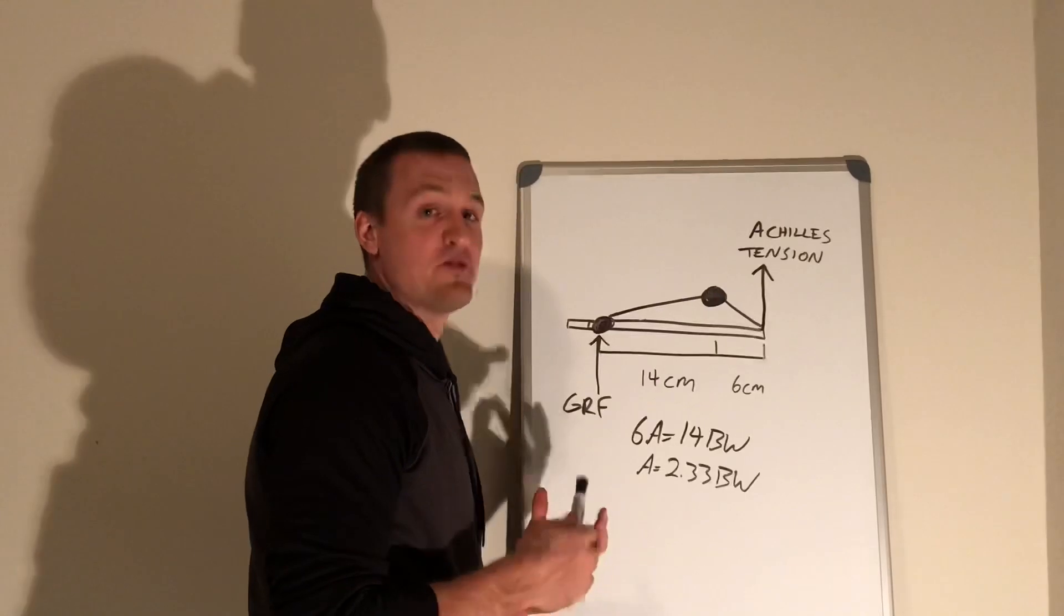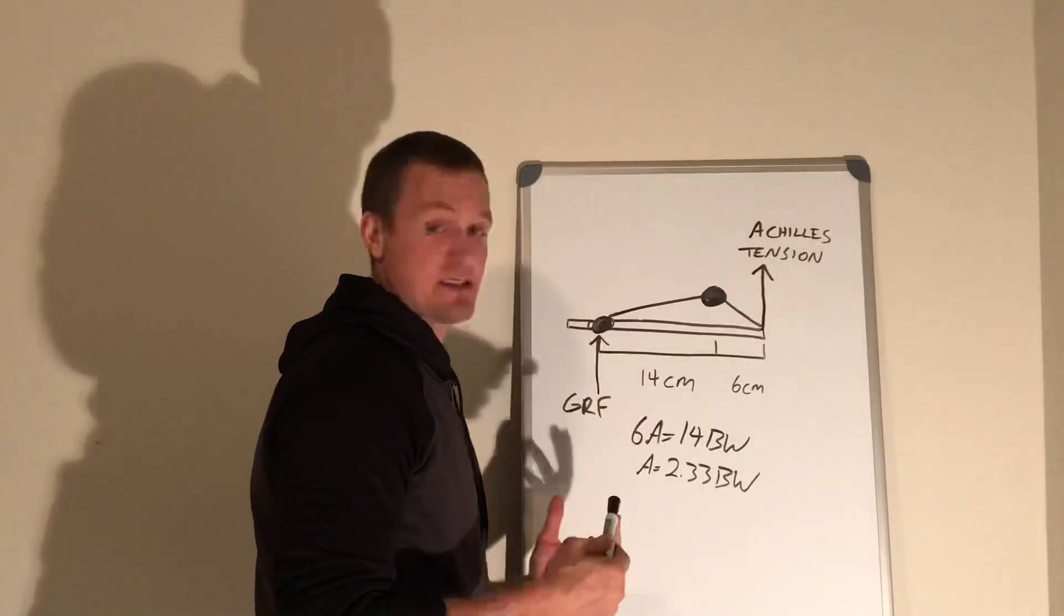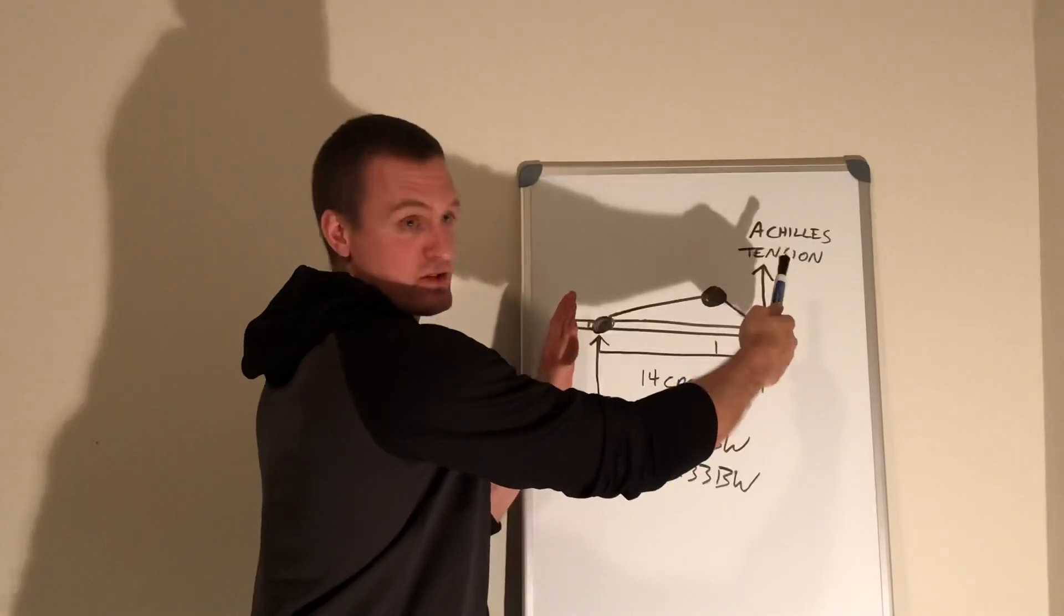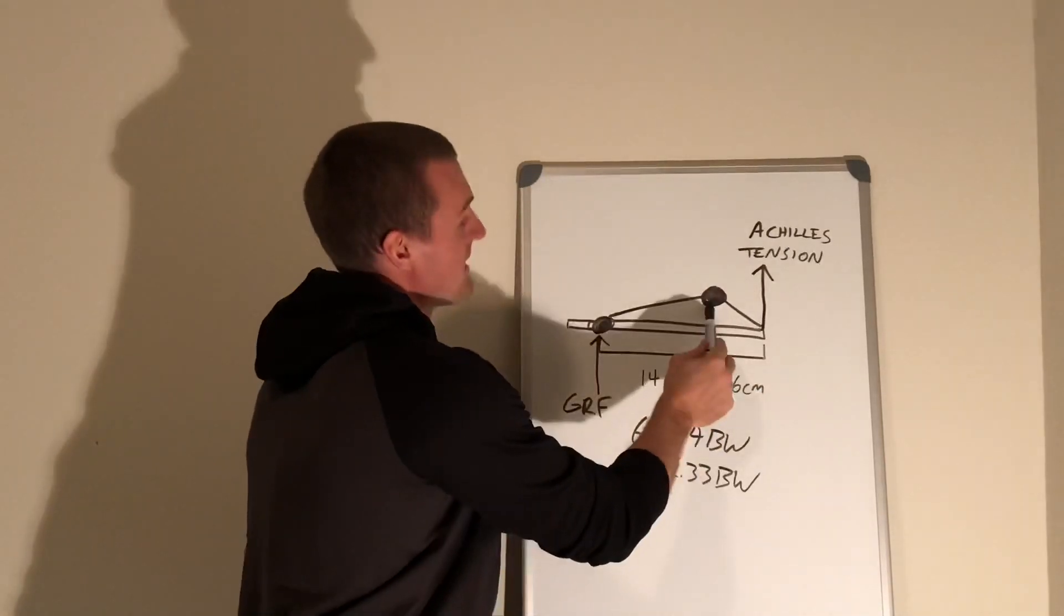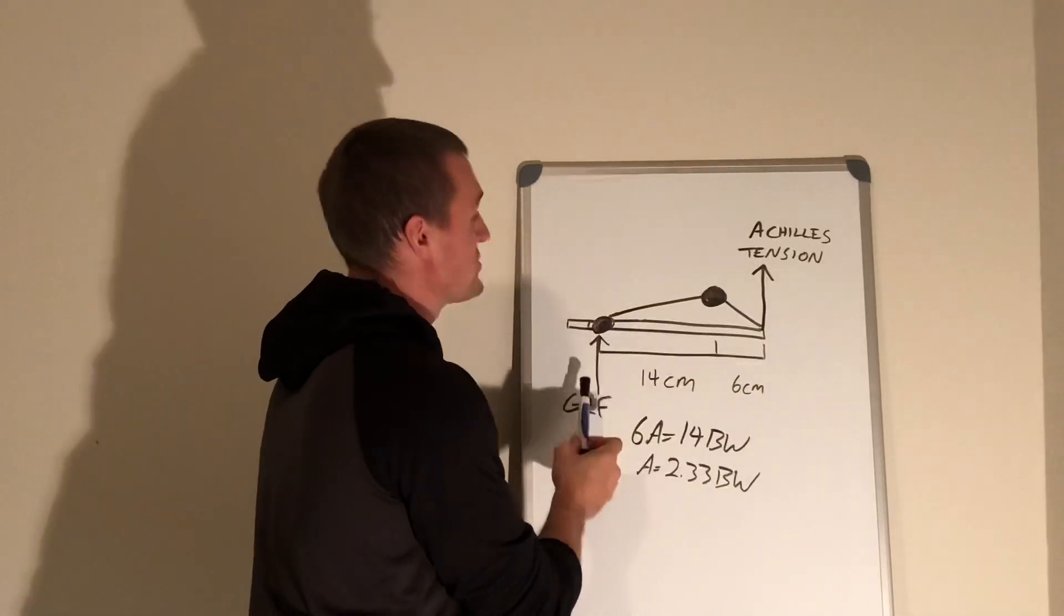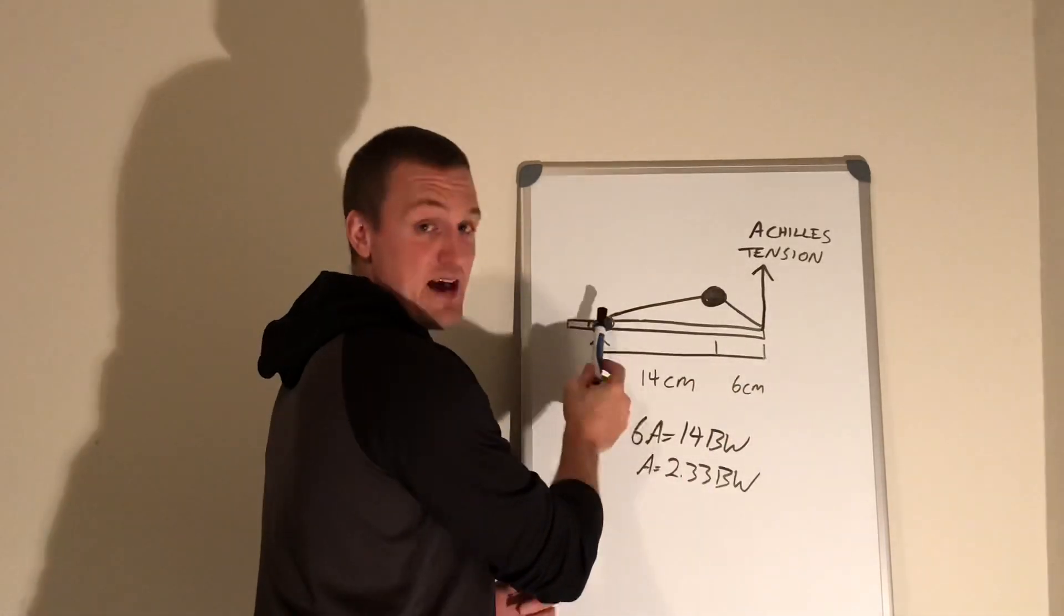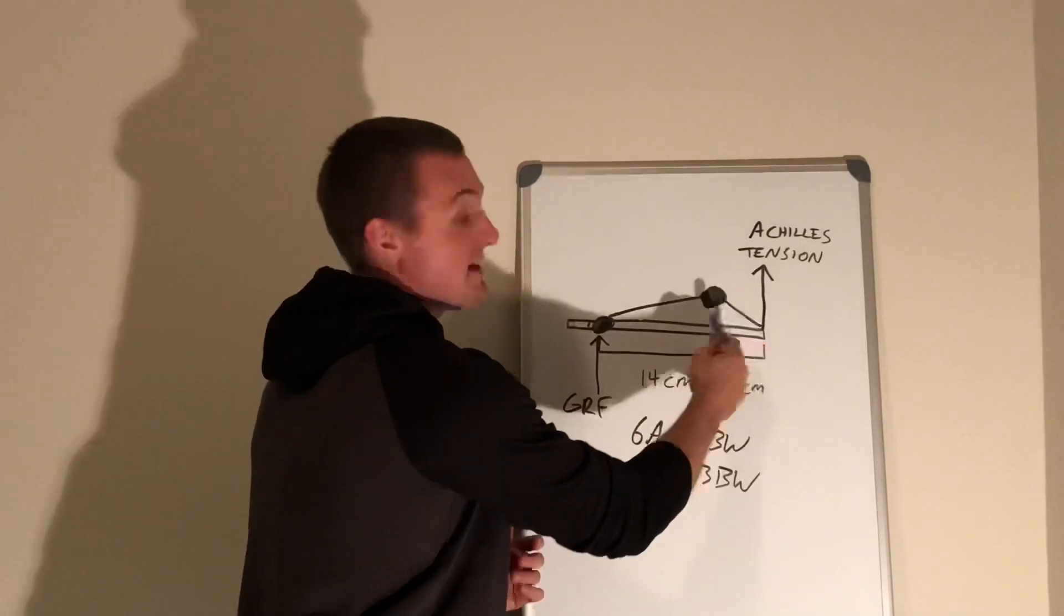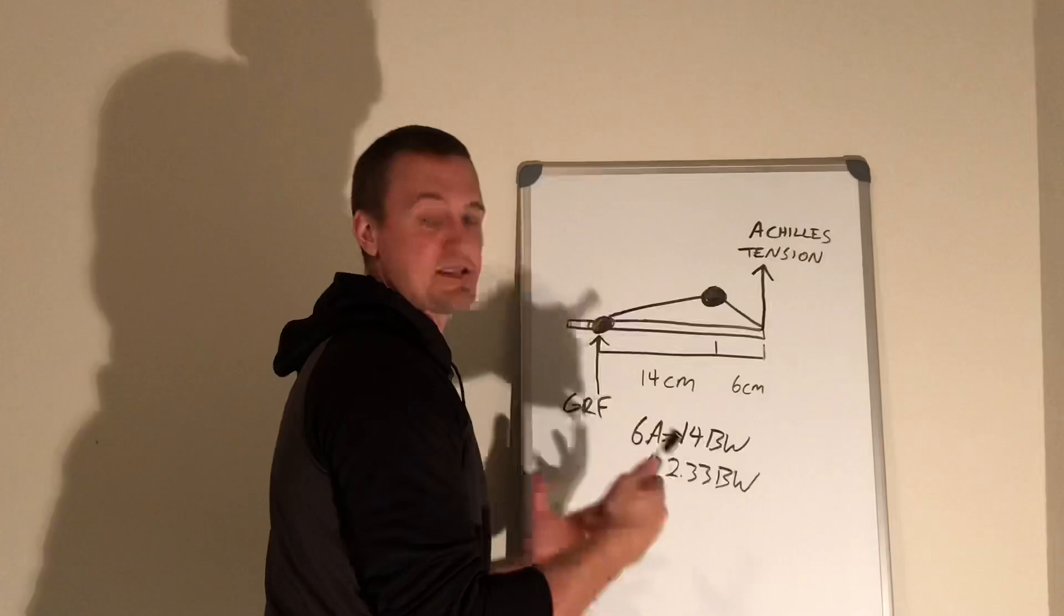Another option would be to view the foot as a first class lever where the axis of rotation is between two forces. So the axis of rotation is the ankle, the Achilles is pulling up on this side on the heel, ground reaction force is pushing up at the ball of the foot on this side. Then it's clear that the Achilles has less leverage, so it's at a mechanical disadvantage.